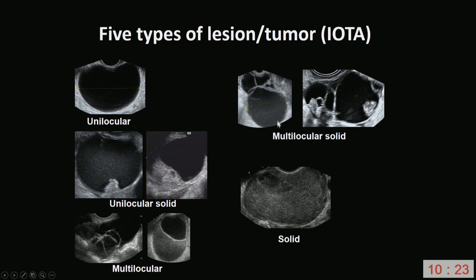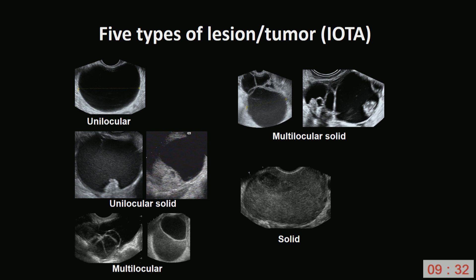A multilocular solid cyst contains both septa and solid components — a papillary projection or other solid tissue. A solid mass consists of at least 80% solid tissue; you scan through the whole volume of the lesion to estimate whether it consists of more than 80% solid tissue. Remember: a unilocular cyst and a multilocular cyst cannot contain solid tissue — as soon as there is a solid component, the word 'solid' must appear in the classification.